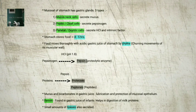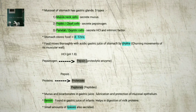The mucosa of the stomach has gastric glands. Gastric glands have three major types of cells: 1. Mucus neck cells, which secrete mucus. 2. Peptic or chief cells, which secrete the proenzyme pepsinogen. 3. Parietal or oxyntic cells, which secrete HCl and intrinsic factor, which is essential for absorption of vitamin B12. The stomach stores food for 4 to 5 hours. The food mixes thoroughly with the acidic gastric juice of the stomach by the churning movements of its muscular wall and is called chyme.